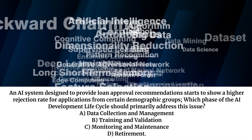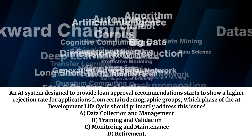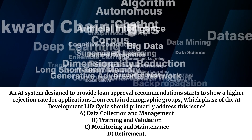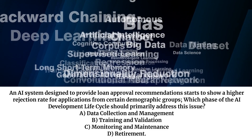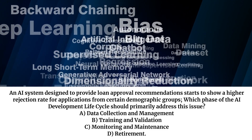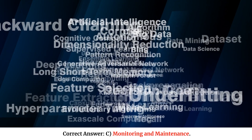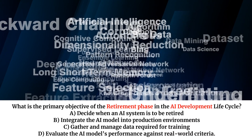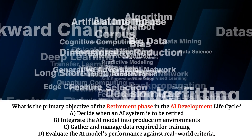An AI system designed to provide loan approval recommendations starts to show a higher rejection rate for applications from certain demographic groups. Which phase of the AI development lifecycle should primarily address this issue? A. Data collection and management. B. Training and validation. C. Monitoring and maintenance. D. Retirement. Correct answer: C. Monitoring and maintenance.